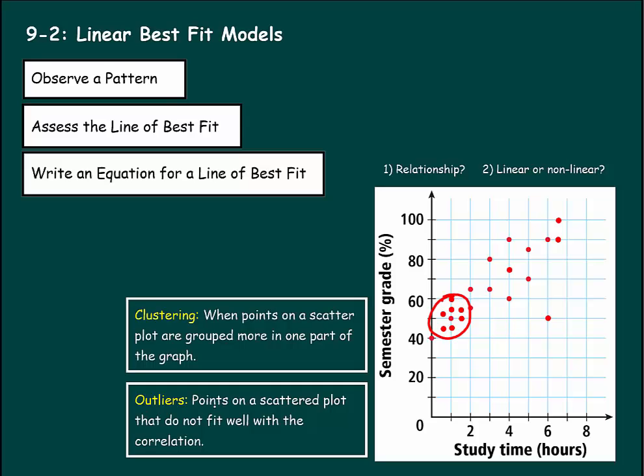Outliers are something else. Outliers are points on a scatter plot that do not fit well with the correlation. For example, this six hours of study time doesn't fit very well. It seems like a lot of people that were studying for five, six, and seven hours were getting pretty good grades. This person who studied for six hours got a little bit of a bad grade. Maybe they just had a bad day. Maybe they didn't get a lot of sleep that night. So you usually have to try to find an explanation of why it doesn't fit.